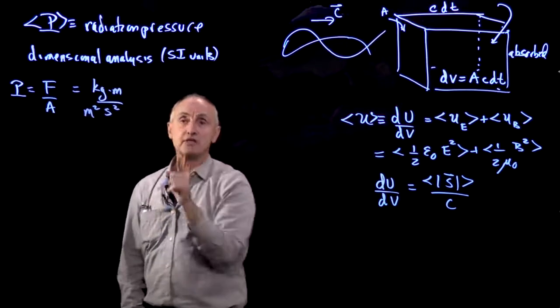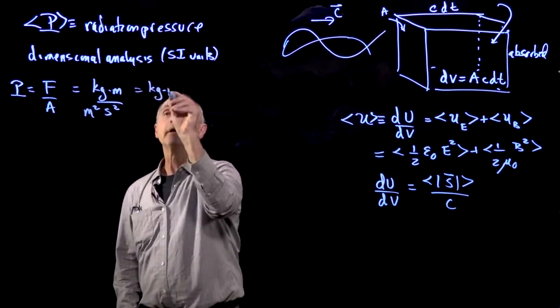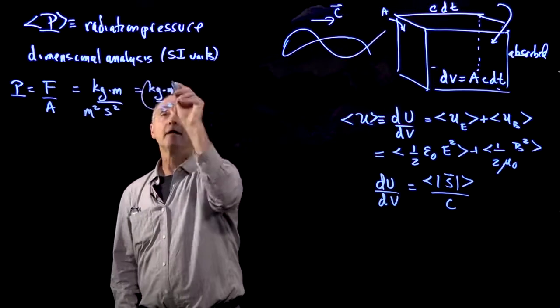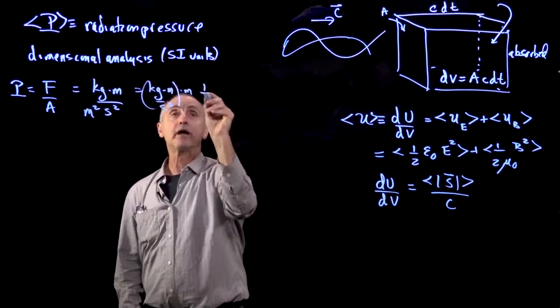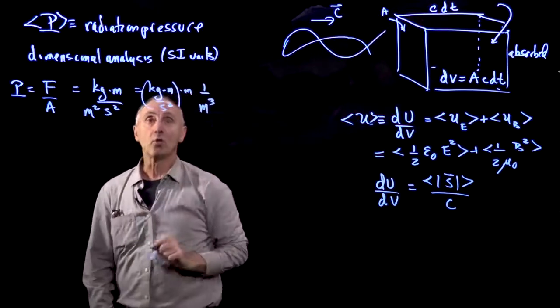Now, let's multiply the top and bottom by meters. So then we would get kilogram meter per second squared times meters, but we have to divide by one more meter, and so we get one over meter cubed.